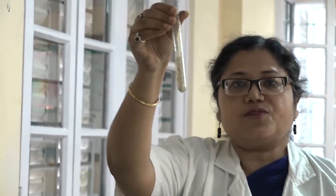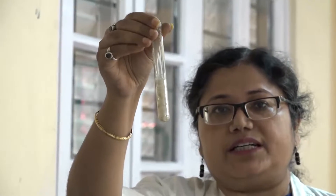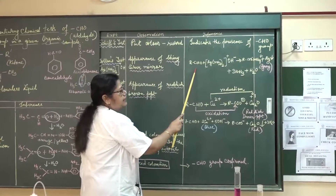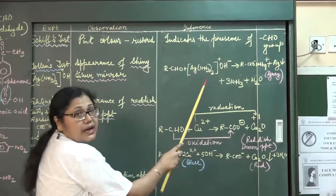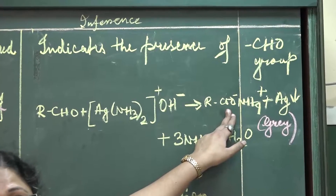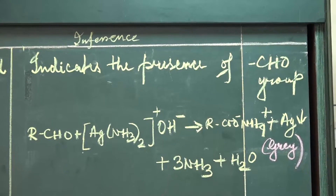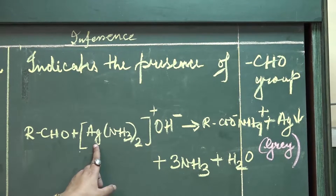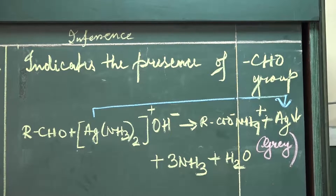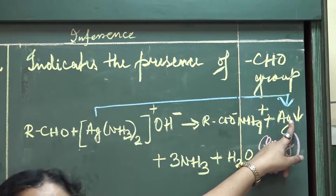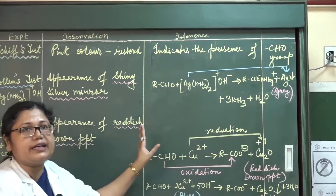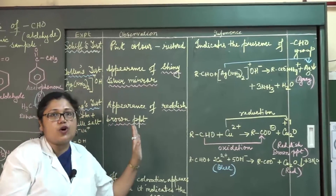You can see the appearance of a silver mirror on the inner wall of the test tube. As Tollen's reagent is a mild oxidizing agent, it oxidizes aldehyde into its corresponding carboxylic acid — changing it into carboxylate ion. The oxidation state of silver goes from +1 to 0, meaning the oxidizing agent is getting reduced. The metallic silver deposit forms a silver mirror on the inner wall of the test tube. This confirms the presence of aldehyde group in the given organic sample. Tollen's test is not given by ketones.